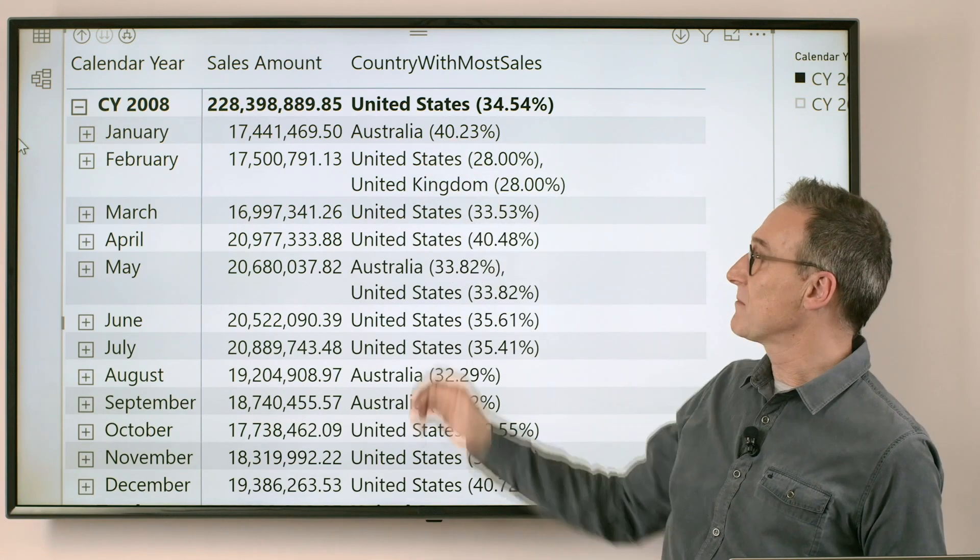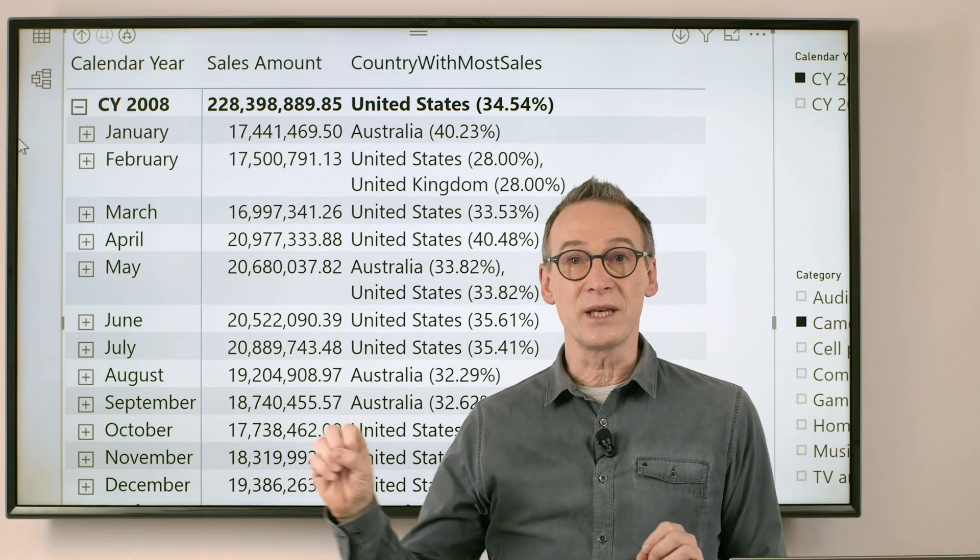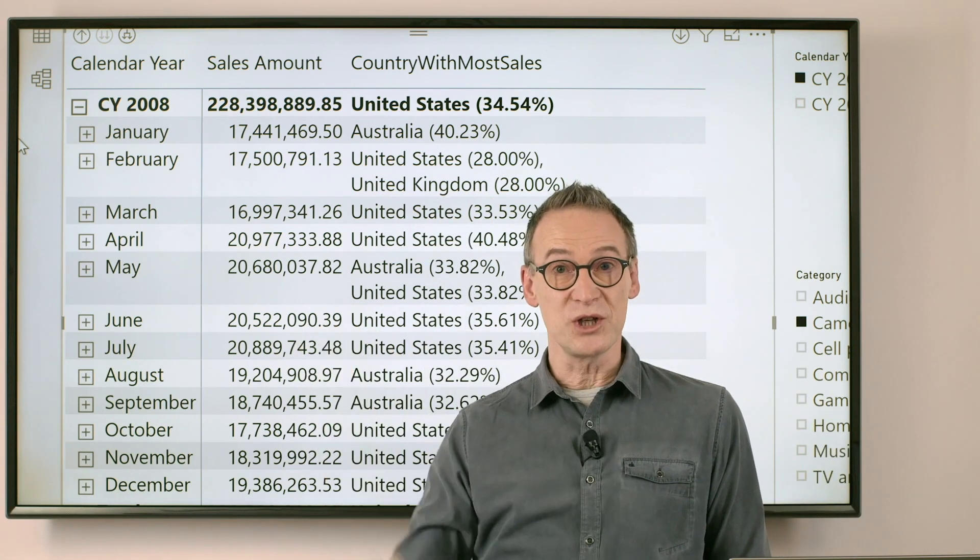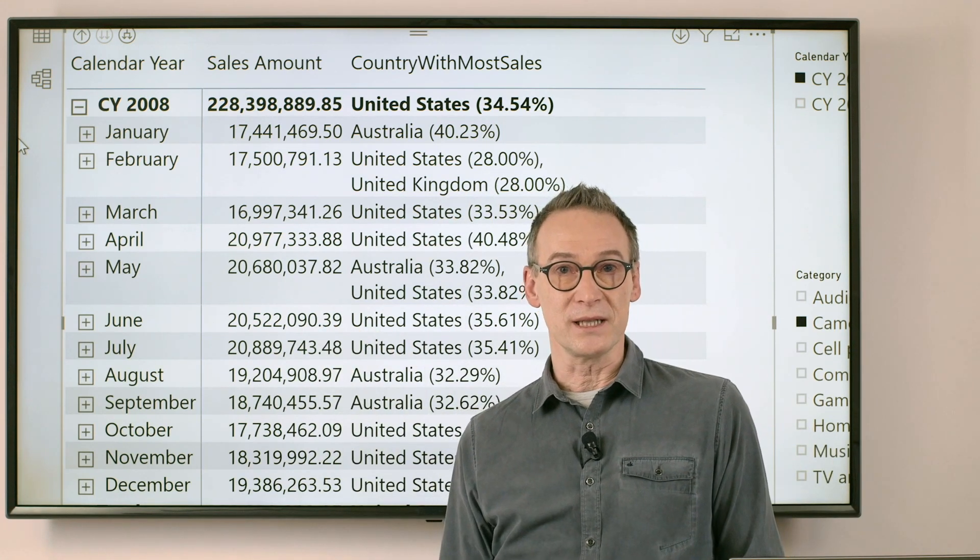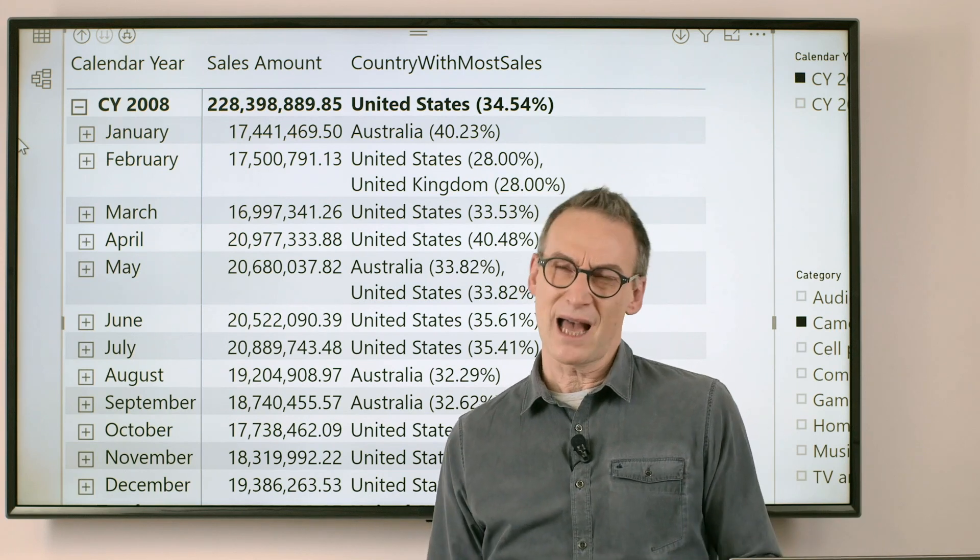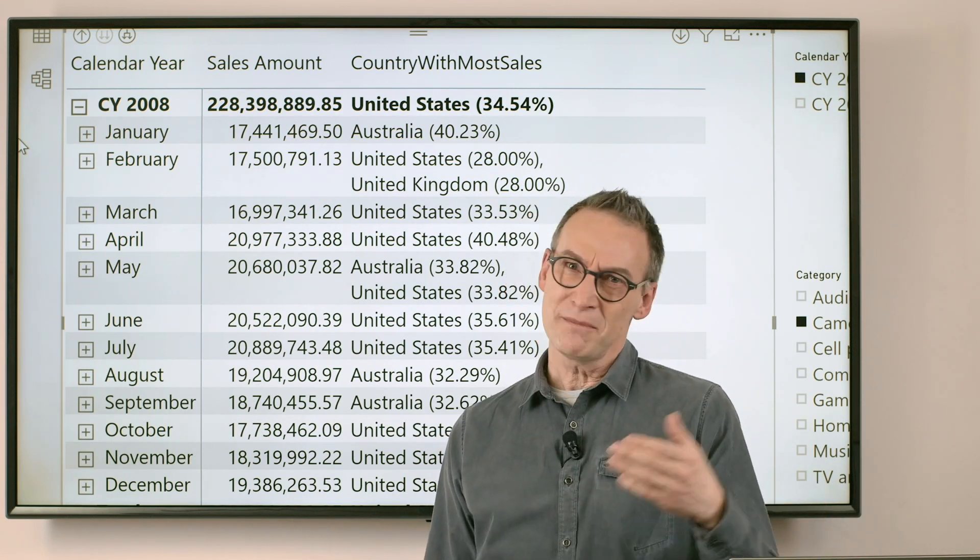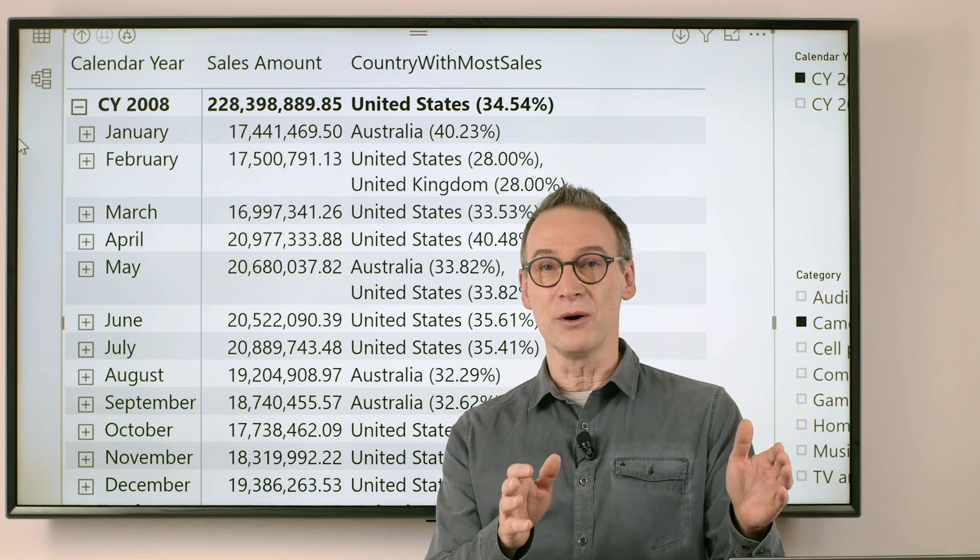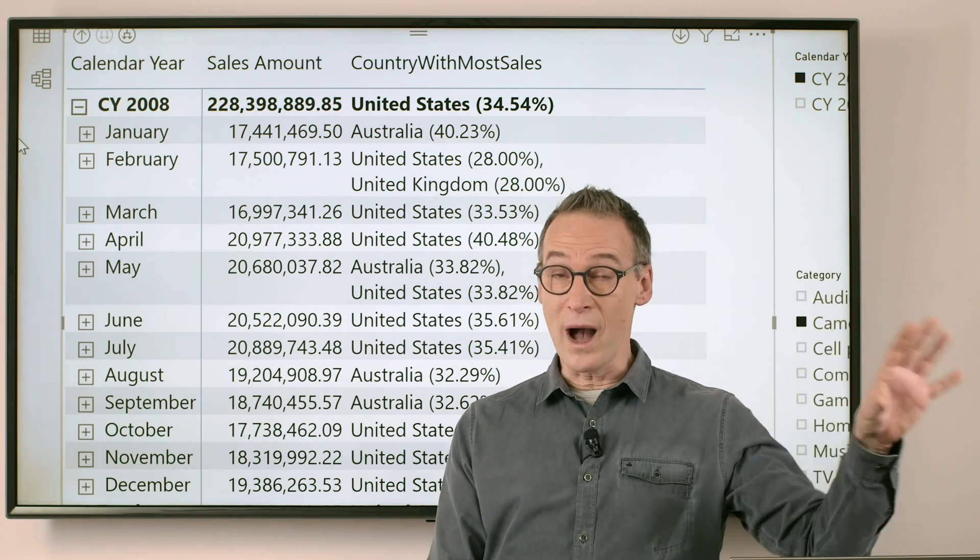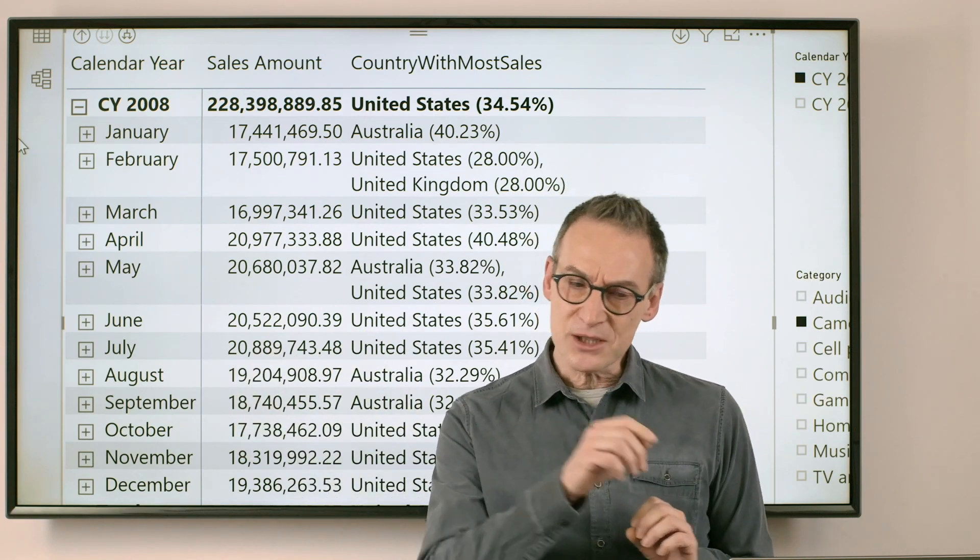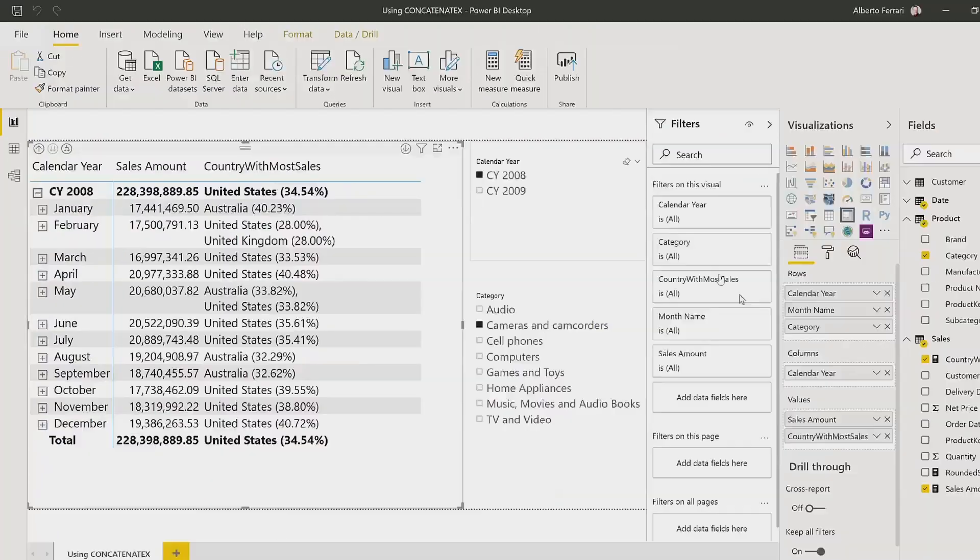Sometimes there might be ties. In February, both United States and United Kingdom are in the top position with 28% of sales. I'm actually cheating, using rounded sales to force ties. But you get the point. I need to handle both the scenario where I have only one top seller or multiple top sellers. Let's go and look at the DAX code.